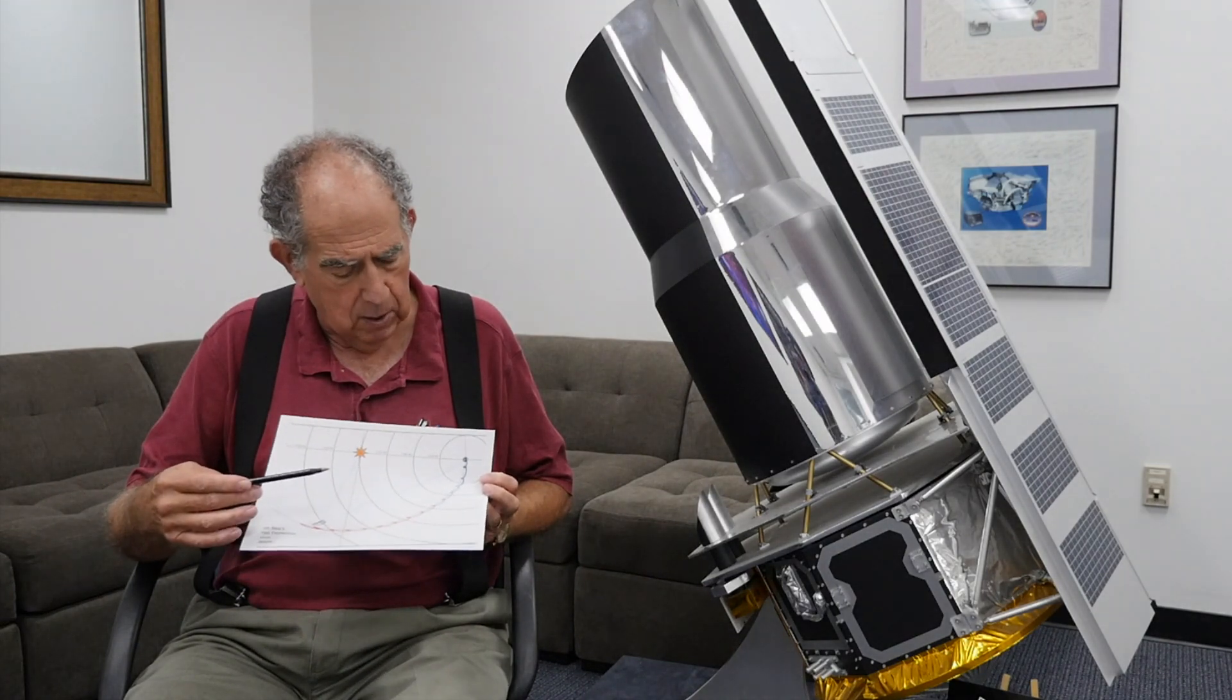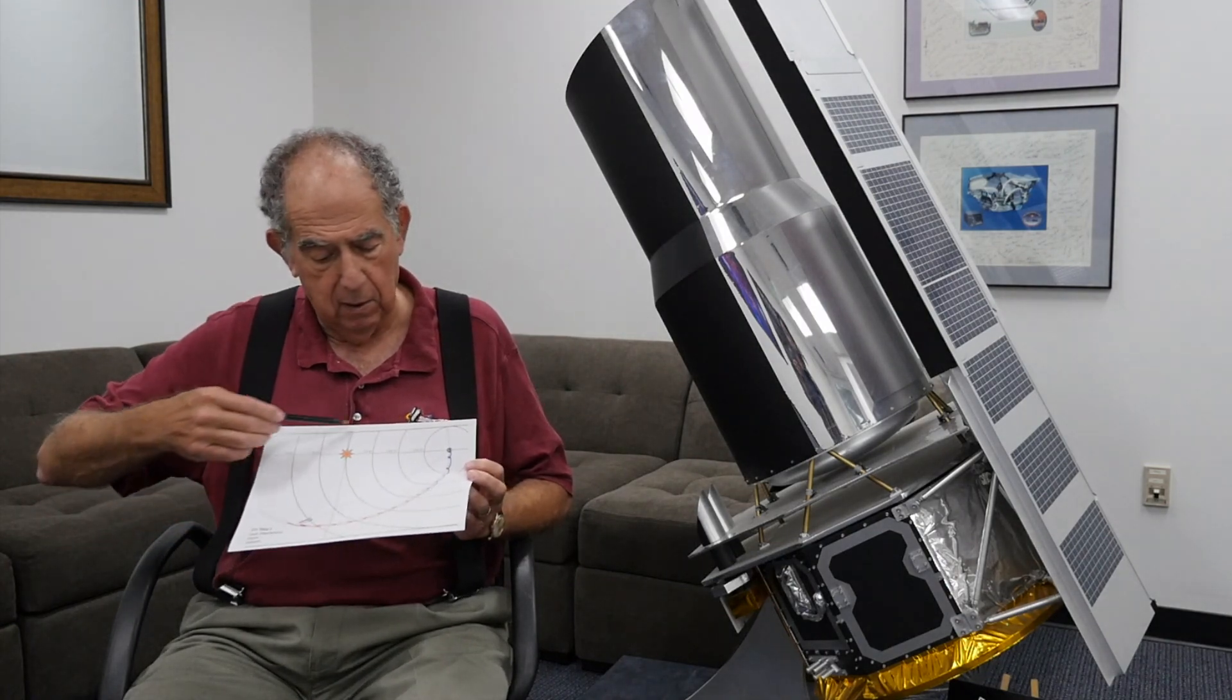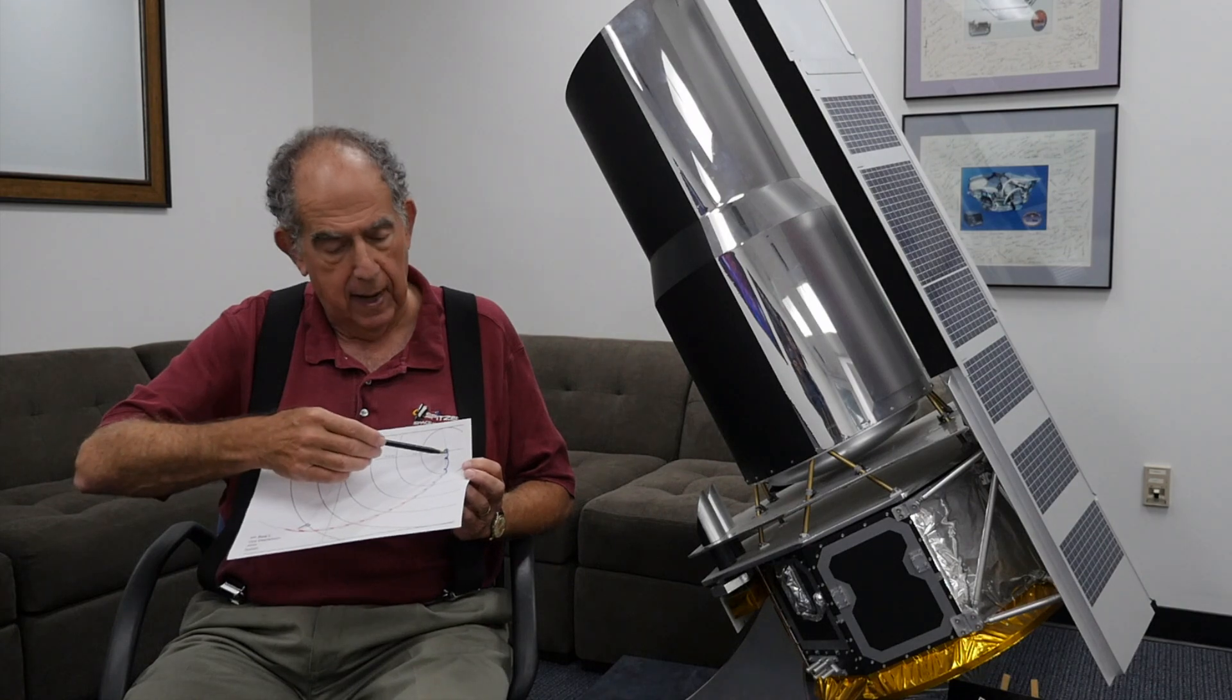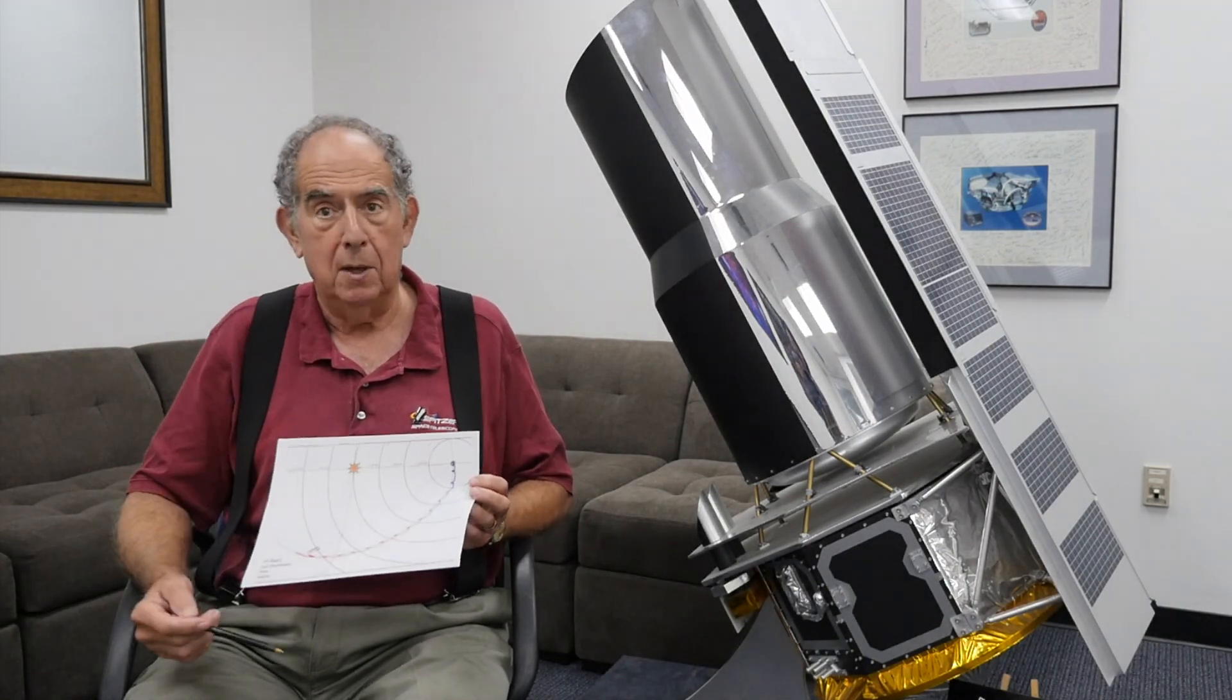The second part of the question: where will Spitzer be in 100 years? It takes about 50 years to go around this circle. So in 50 years, it'll come back close to the Earth, and then in another 50 years, it'll be close to the Earth again.